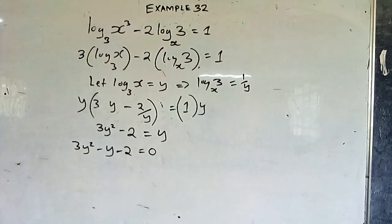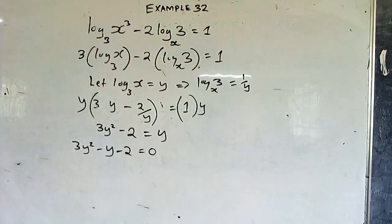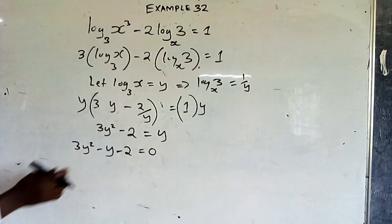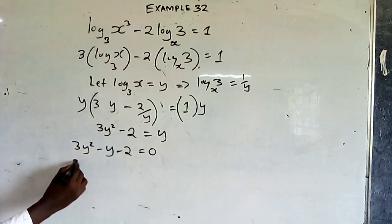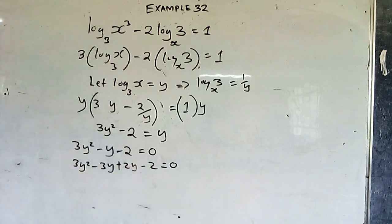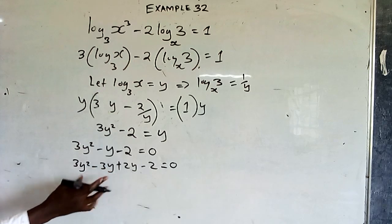You can use the quadratic formula or factorization. For factorization, we need a product of 3 times negative 2 equals negative 6 and a sum of negative 1. The numbers are negative 3 and positive 2. So we split: 3y² minus 3y plus 2y minus 2 equals 0.